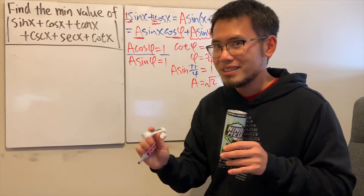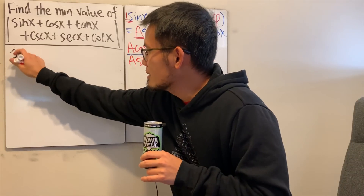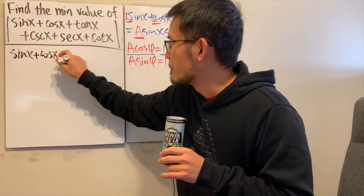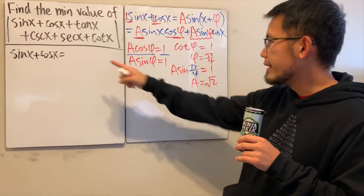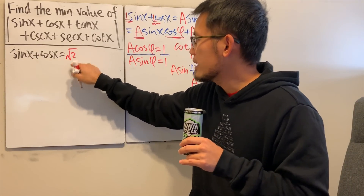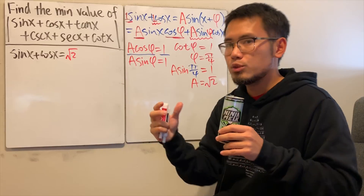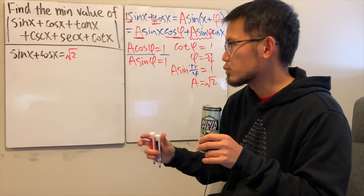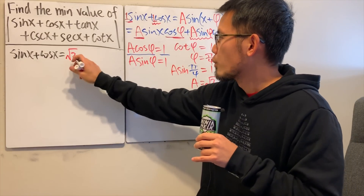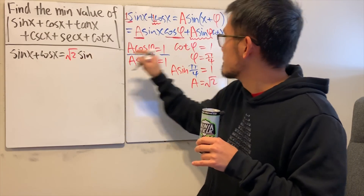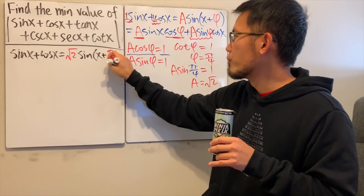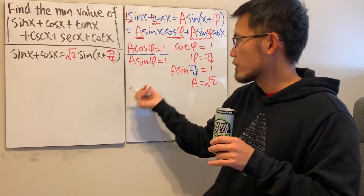Now we can feel much better about this expression. Sine x plus cosine x equals √2 times sine(x + π/4). That's the new amplitude — when you add the sine x and cosine x waves, the result is slightly higher. Let's call this expression k, so: note that √2·sine(x + π/4) = k.